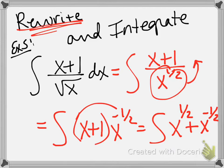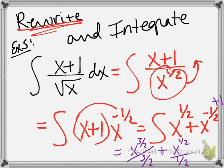So now let's integrate it. x to the 1 half power becomes x to the 3 halves divided by 3 halves. x to the negative 1 half power, when you add 1, becomes x to the 1 half power divided by 1 half, which you can rewrite by flipping the fraction.